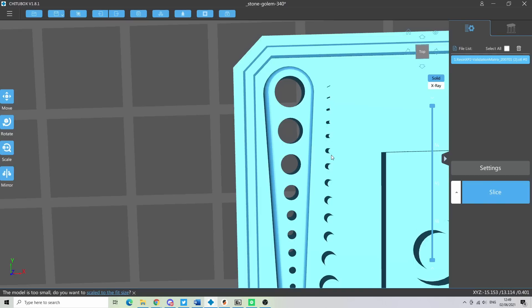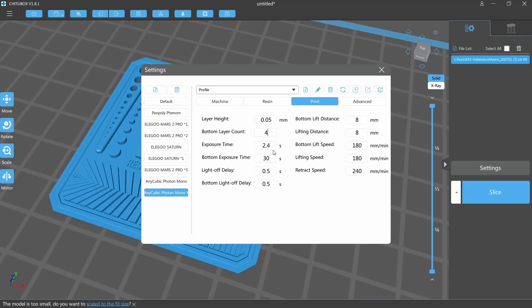Now for the XP2 tests, it is recommended to use four bottom layers. As for resolution, I am going with 0.05mm layers.